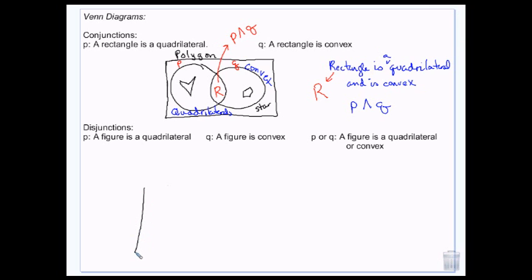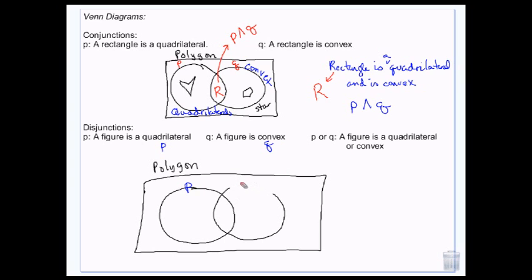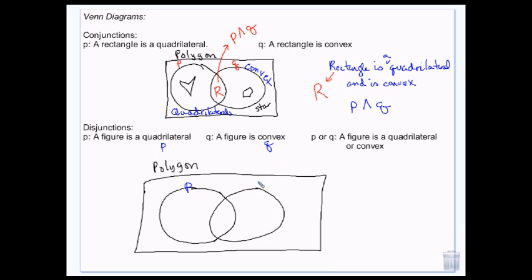Again we'll stay in the polygon universe. I'll have my quadrilateral area and my convex area, so quadrilaterals are P and convex is Q. I'm going to make my circles a little more overlapping. I have my quadrilaterals, I have my convex figures, and the center is still going to be P and Q.